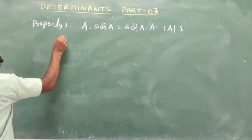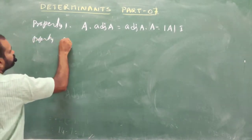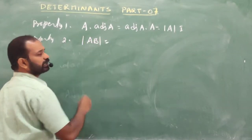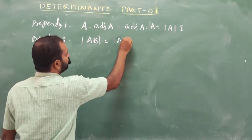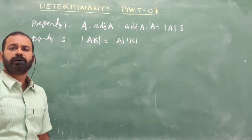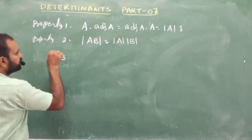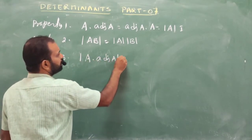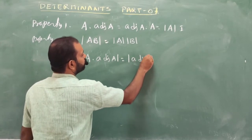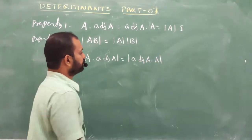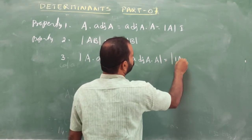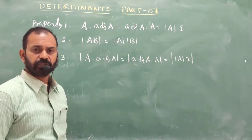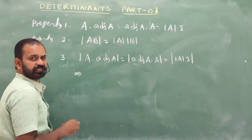Property 2: The determinant of the product of two matrices equals determinant of A times determinant of B. Property 3: Determinant of A times adjoint A equals determinant of adjoint A times A, which equals determinant of |A| times I. Applying the determinant to both sides: